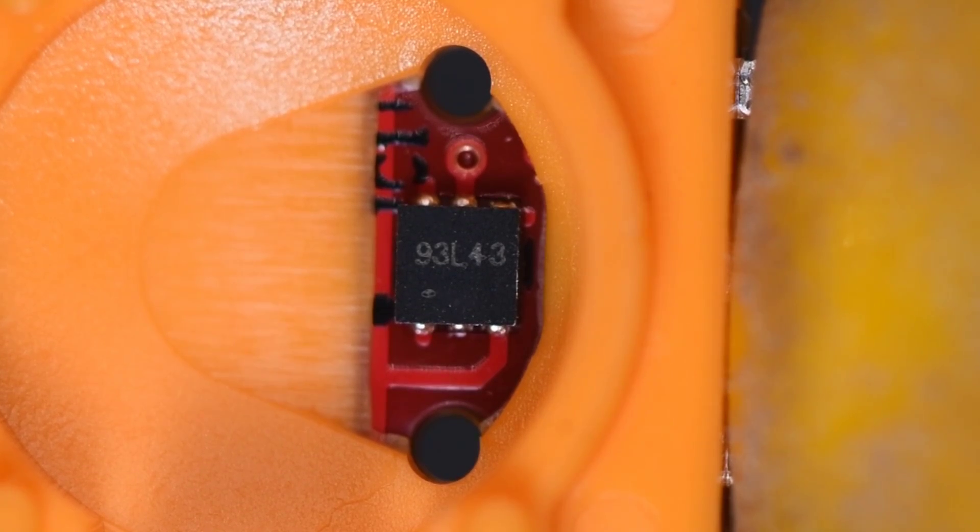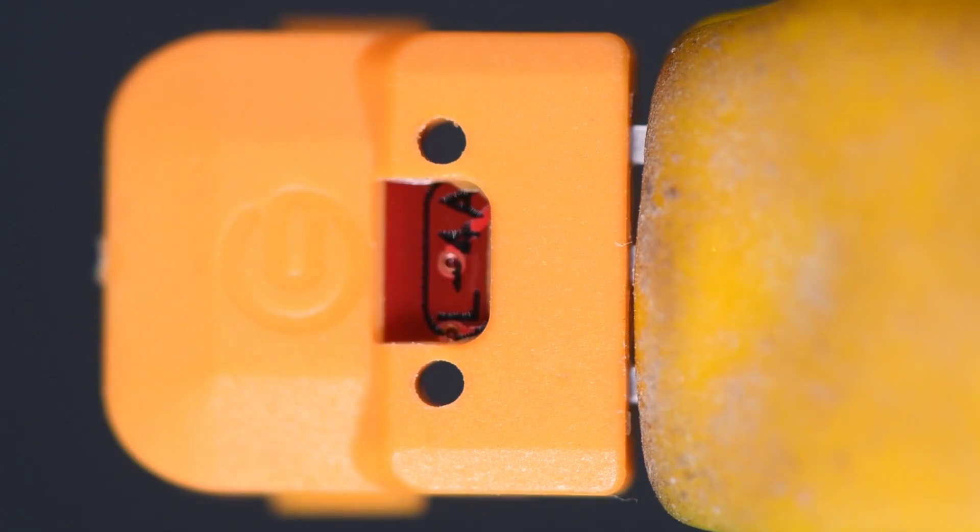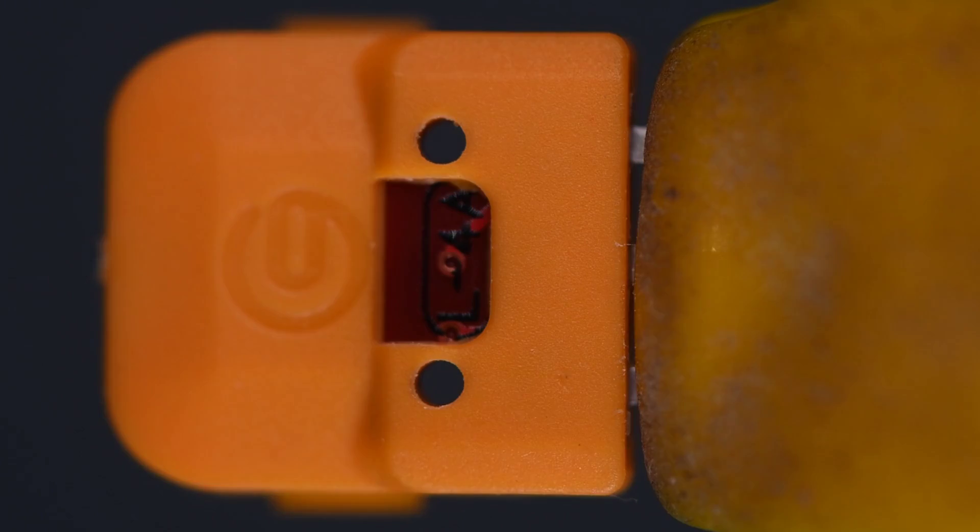But all the ICs in the Thompson kit are labeled 93L43, no matter the printing on the PC board. And there are noticeable electrical differences between the two types of sensor.